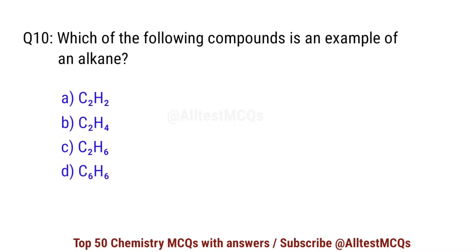Question number 10. Which of the following compounds is an example of an alkane? Right option is C: C2H6.